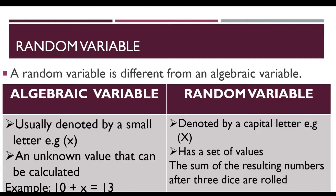A random variable is different from an algebraic variable. Algebraic variables are usually denoted by a small letter, while random variables are denoted by a capital letter. For example, the capital letter X for the random variable and the small letter x for the algebraic variable. An algebraic variable is an unknown value that can be calculated. For example, 10 plus x equals 13 — the variable x is an algebraic variable because you can solve it and find its value by calculating it.